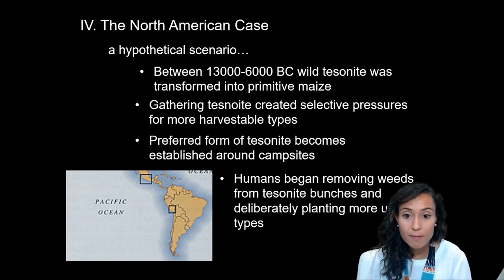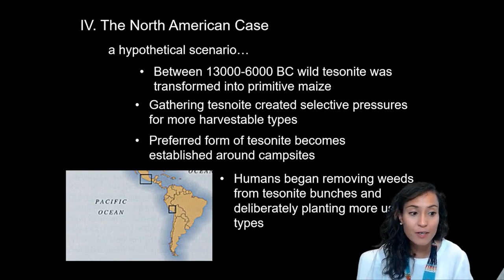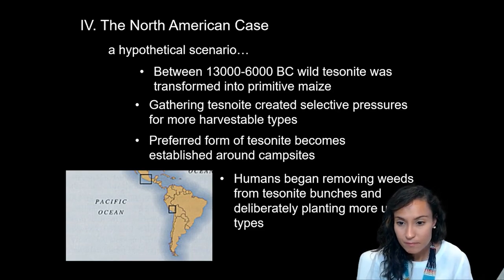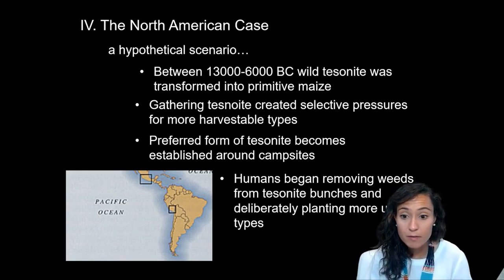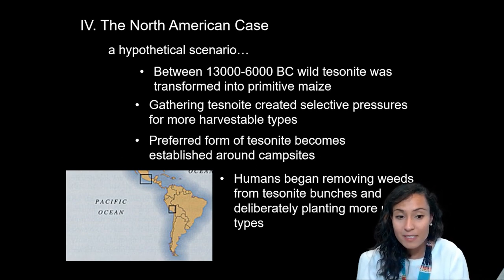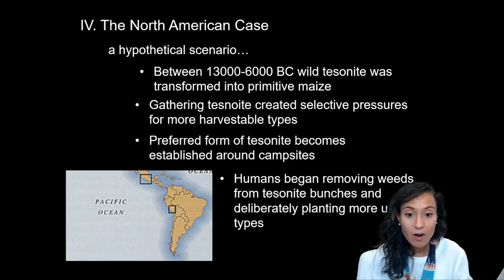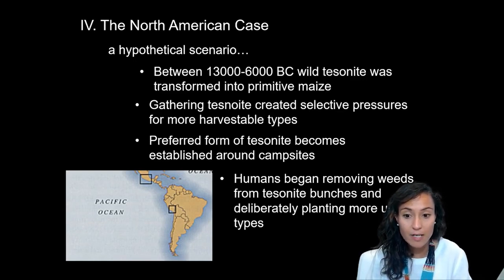Over time, this form of teosinte would become established by campsites and in abandoned middens or trash pits near settlements. Humans would remove weeds from these teosinte plant colonies and then begin to deliberately plant the more useful types. This process is what converted the hard fruit cases of the teosinte grass into shallow, softer cups that carried elongated husks, enclosing and protecting the corn kernels.